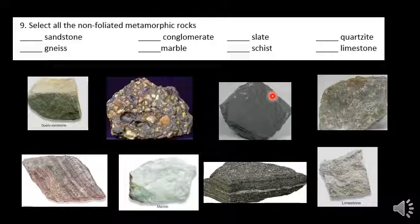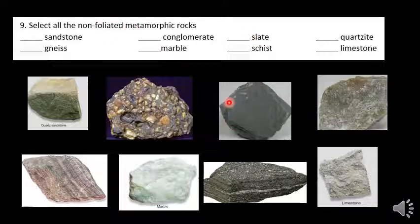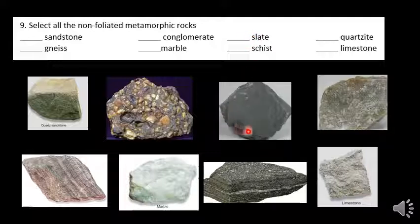Slate is over here. Slate is a metamorphic rock and it comes from shale — don't get shale and slate mixed up. Shale is the sedimentary one; slate is the metamorphic. But we're looking to see if it's foliated or non-foliated. Slate is foliated — you can see the lines in it. Just like shale has those laminated lines where the mud settles out in nice flat layers, slate keeps those flat layers, and those flat layers are called foliation. We're looking for non-foliated, so even though it's metamorphic, we're not going to check slate.